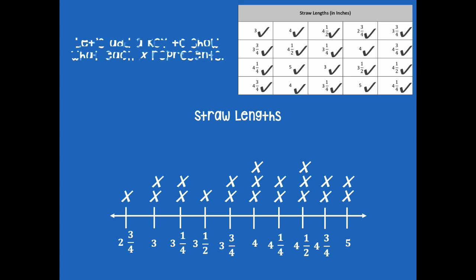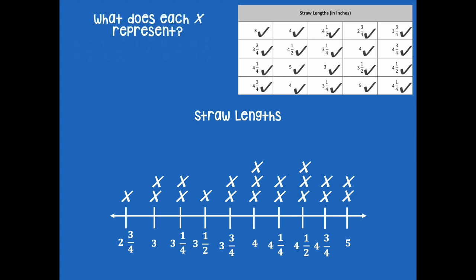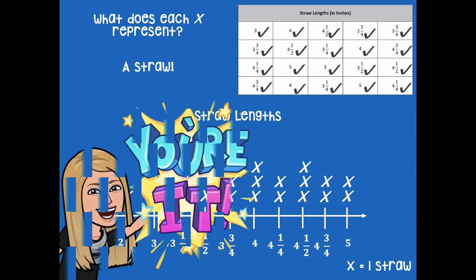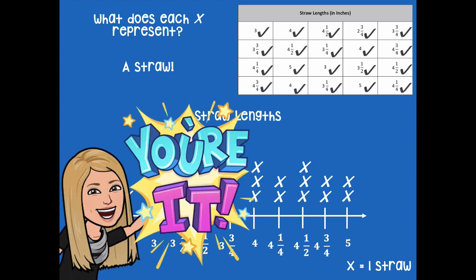Let's add a key to show what each X represents. What does each X represent? It represents a straw. So we can label that as X equals one straw. You have to be specific and say one because sometimes a line plot might represent more than one. Pause the video, add your key of X equals one straw to your line plot, and then click play when you're ready for the next step.